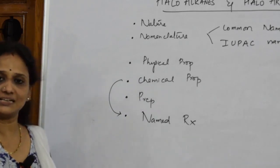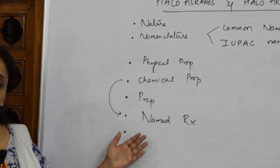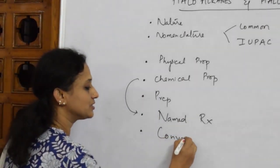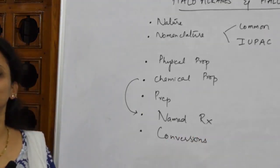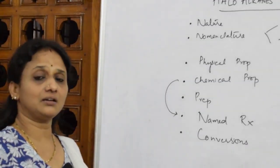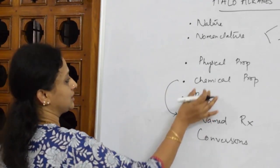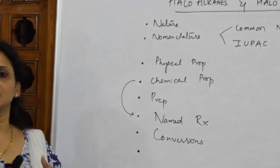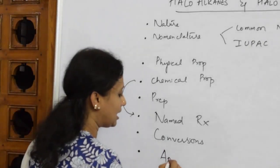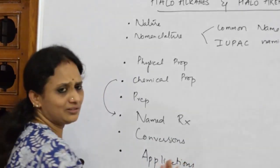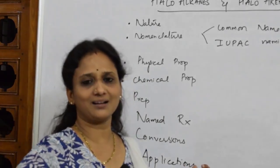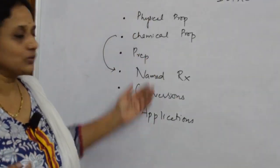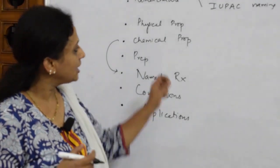After name reactions, I must be very clear on conversions — every chapter has 15 to 20 conversions which must be memorized along with their reagents. After learning preparations, physical properties, chemical properties, name reactions, and conversions, I complete the chapter by learning applications of these compounds, which may carry one mark that we should not miss.